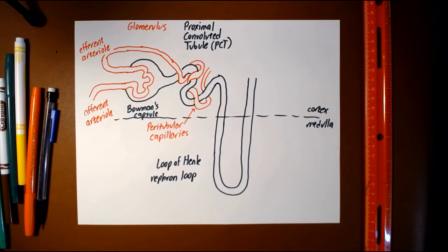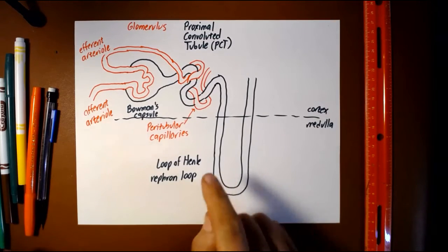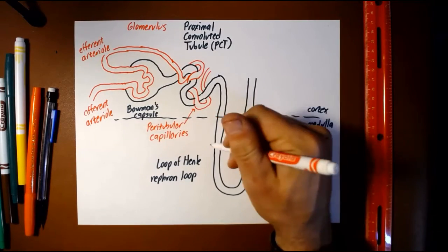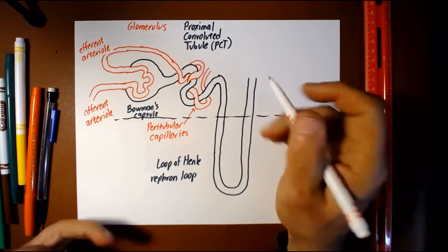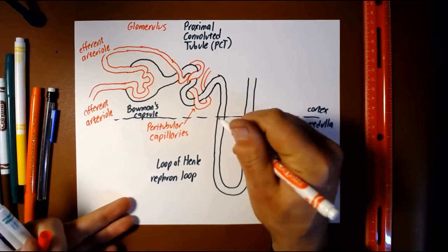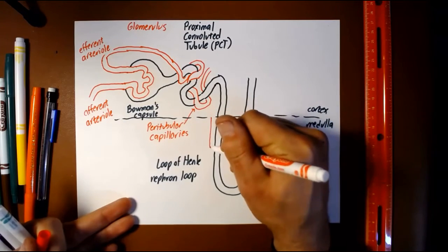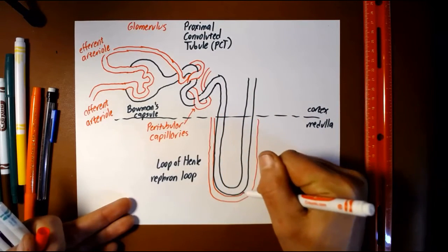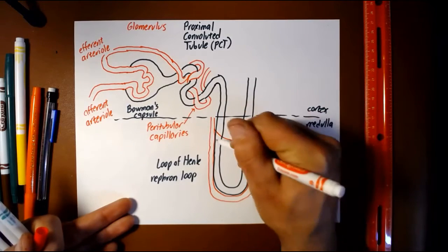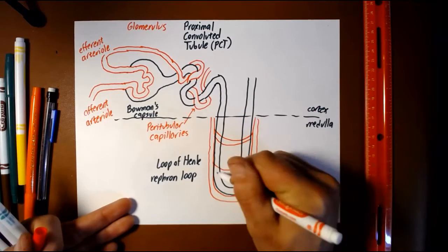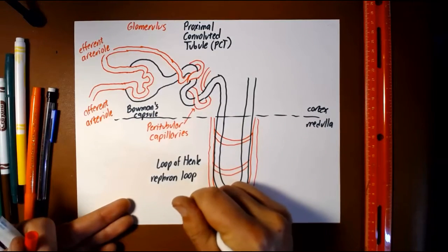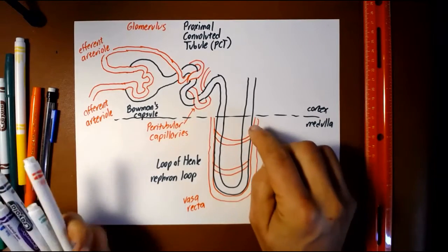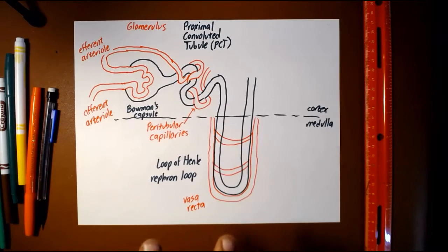Depending on which of two different kinds of nephron we're in, there are two different ways the blood vessels could be arranged around this. In one case they're just regular peritubular capillaries. The other one is that they're arranged in something called the vasa recta — a really interesting set of vessels that go alongside the loop of Henle. But keep in mind that's only in certain kinds of nephrons.